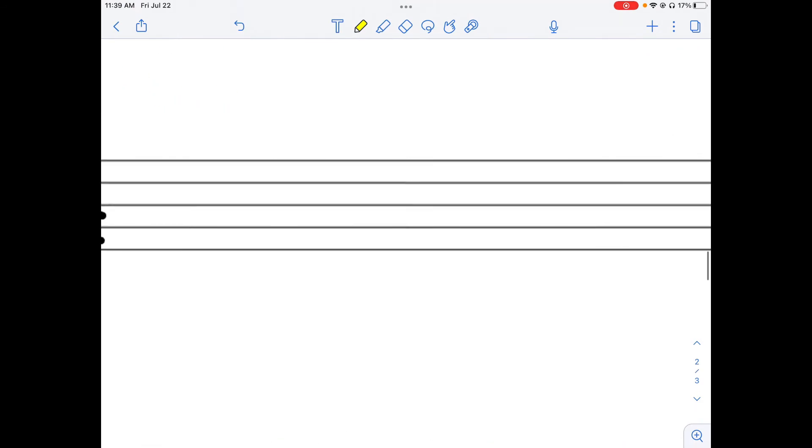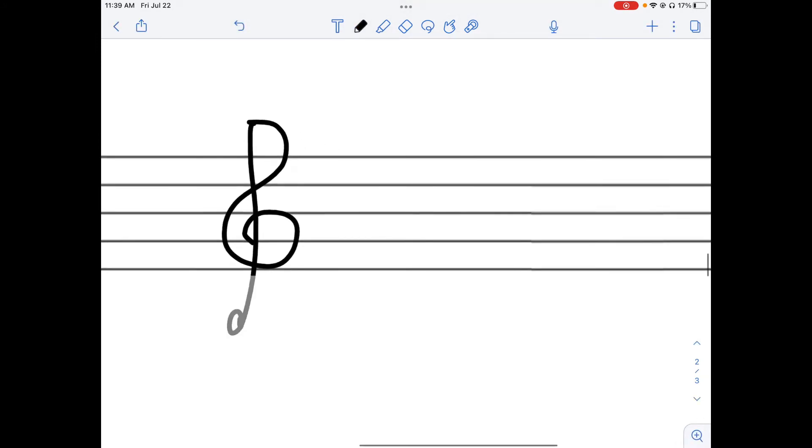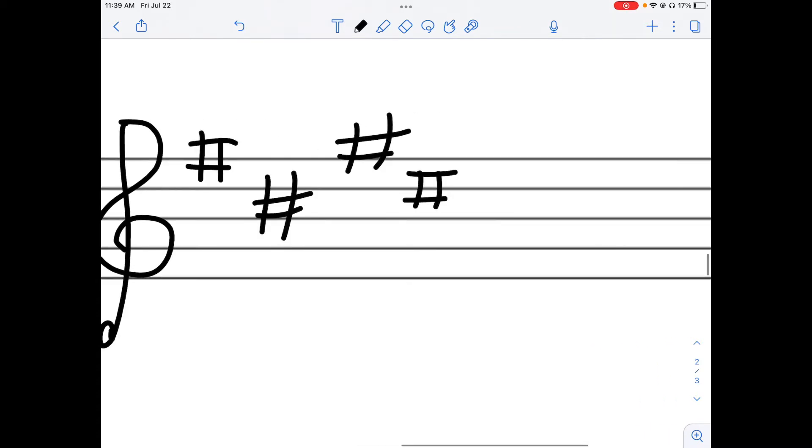Let's say I'm in the treble clef and I have four sharps. Notice I have to write the sharps in the order of sharps that we used before, so we'd start off with the F, C, G, and D—Fat Cats Go Down.